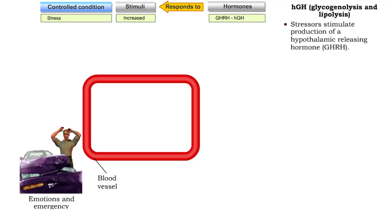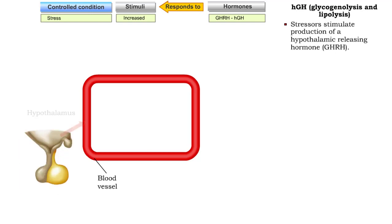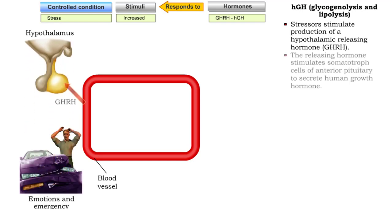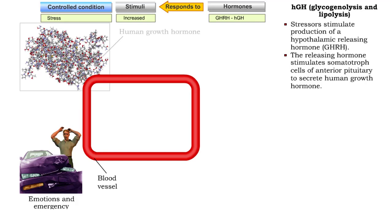Stressors, such as declining blood pressure due to blood loss or strong emotional reactions, stimulate production of hypothalamic-releasing hormone, GHRH. GHRH stimulates the somatotroph cells of the anterior pituitary to secrete human growth hormone.